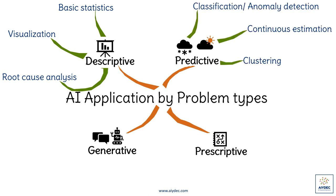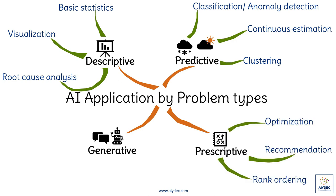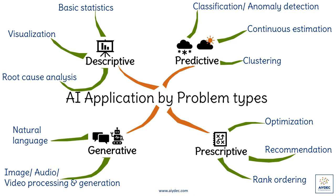For predictive AI, models can be built to classify entities into known classes, estimate a continuous value of an entity, or create new classes to group entities into. With prescriptive AI, you can optimize a business objective, recommend the right next action given a list of possible actions, and also rank order your recommendations. With generative AI, you can build programs to process and generate natural language. You can also process and generate image, audio and video data. This is motivated by the idea of AI to see like a human, hear like a human. Let's look into all of these in more detail.